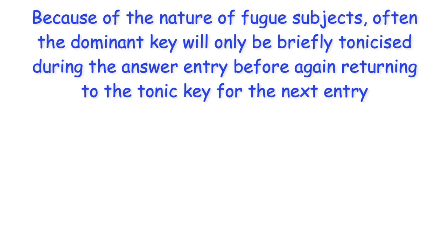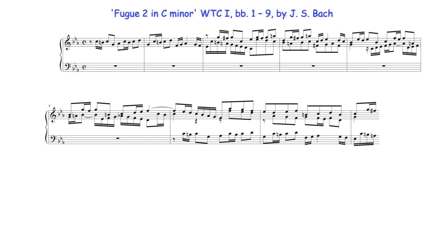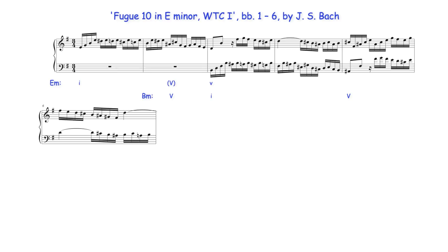Because of the nature of fugue subjects, often the dominant key will only be briefly tonicised during the answer entry before again returning to the tonic key for the next entry. This of course is dependent upon how many parts are included in the fugue. Here in this three-part fugue, where a tonicisation of the dominant occurs, the tonic and dominant chords of both keys are still prominently used throughout the subject-answer pair. C minor's tonic chord, for example, is here used as the pivot, sounding also as the subdominant in G minor. And here we have modulation to E minor's dominant chord, which also sounds as the tonic in B minor.